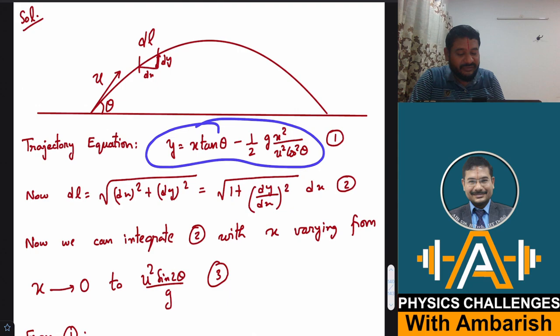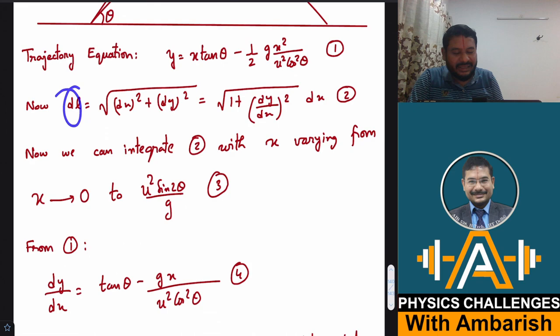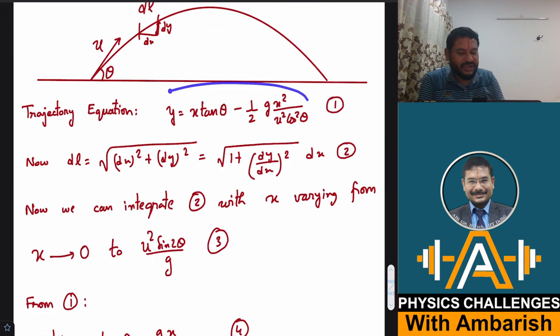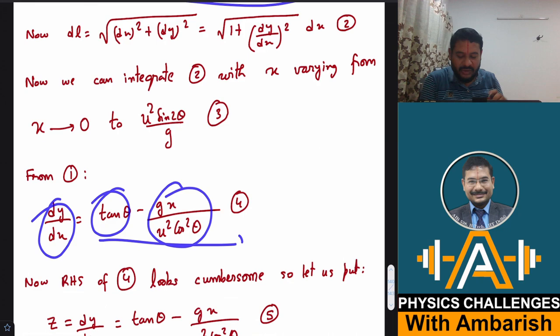I can differentiate this with respect to x and if you do that, of course once I have the dl then obviously I can integrate dl with x varying from 0 to the maximum range. So now what to do about dy by dx? So just differentiate this with respect to x. So dy by dx happens to be tan theta minus g x upon u square cos square theta.